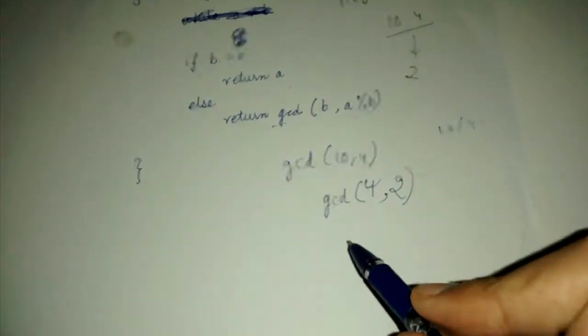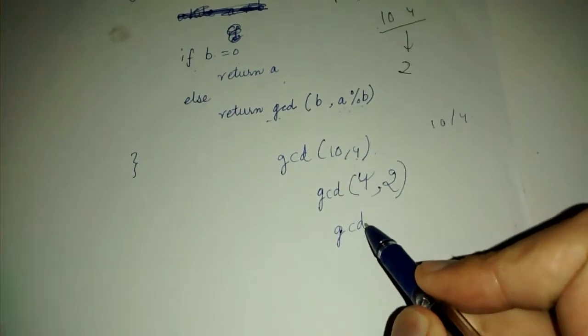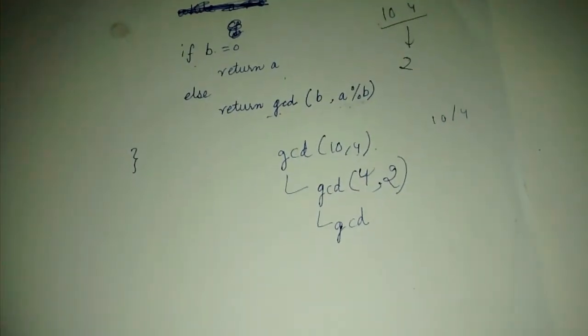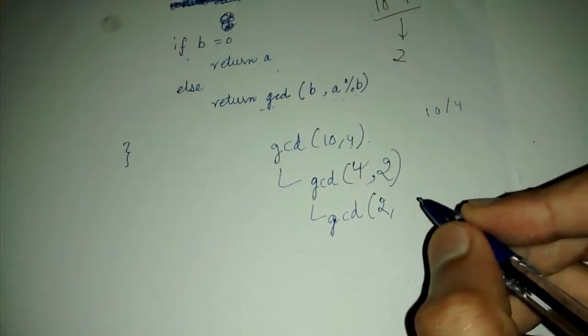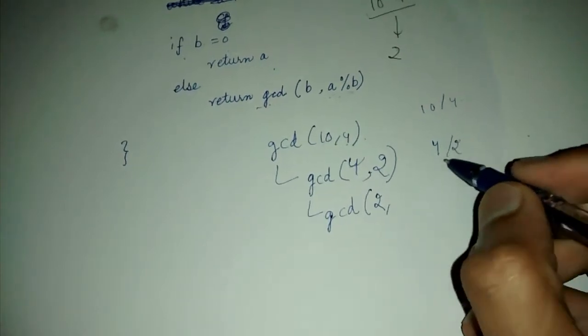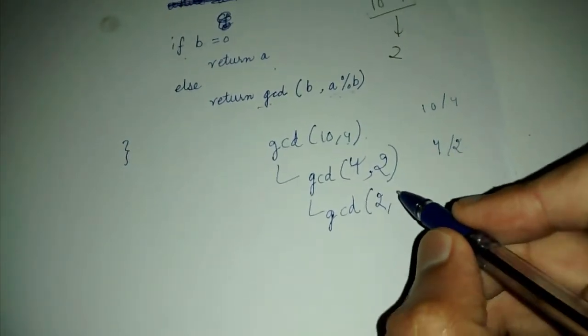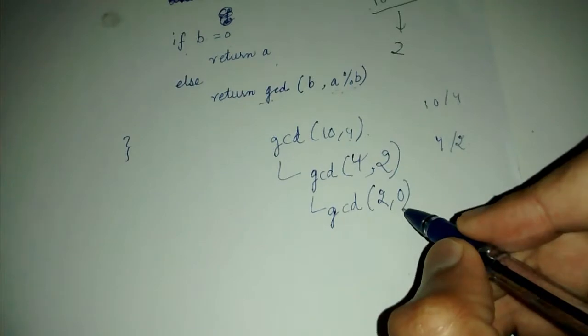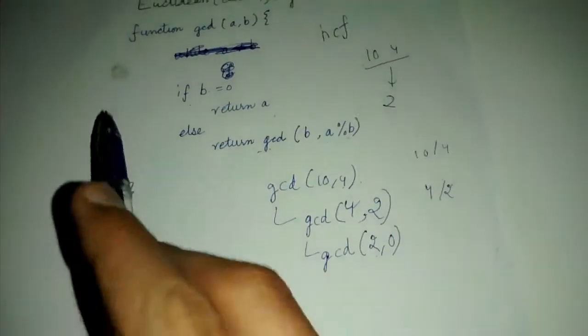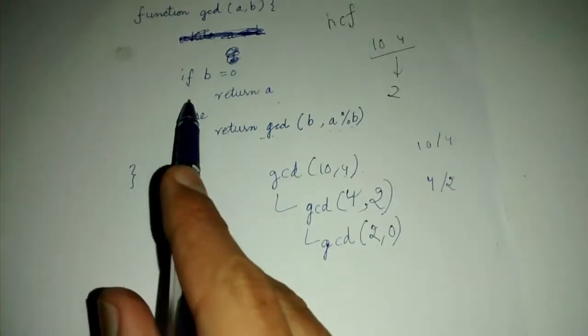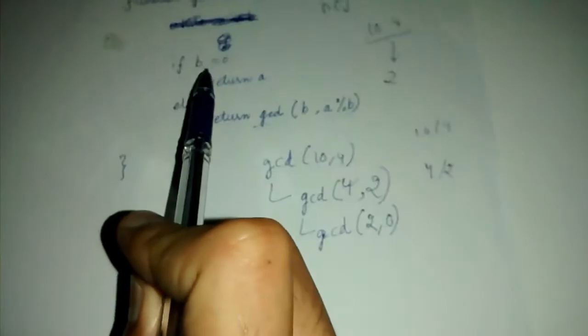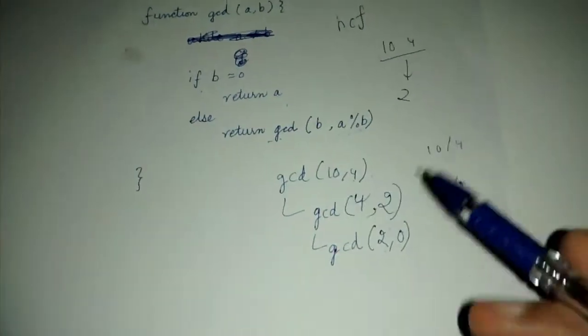Here we return GCD of 2 comma 0. In this case B is 0, so we return A that is we return 2.